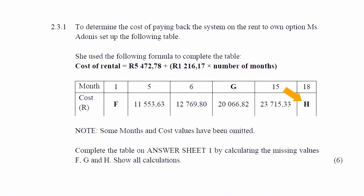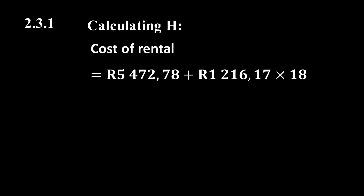Next we calculate H, which is the total amount paid for renting the solar power system for 18 months. Substituting 18 for the number of months into the formula gives us R5,472.78 + R1,216.17 × 18. Simplifying this equation gives us the value for H equal to R27,363.84.